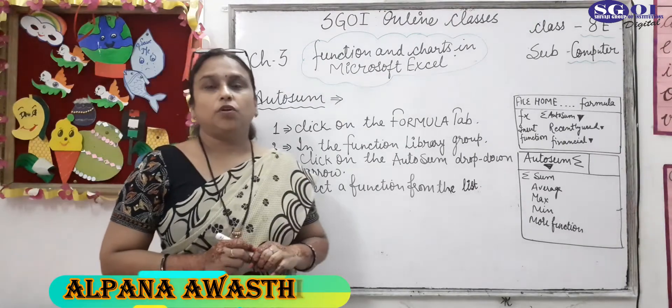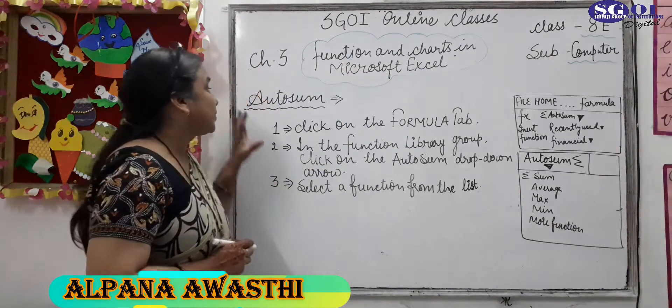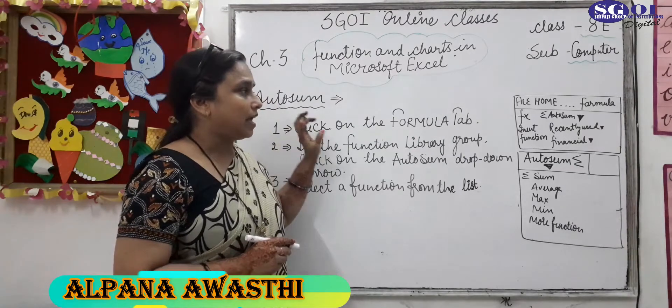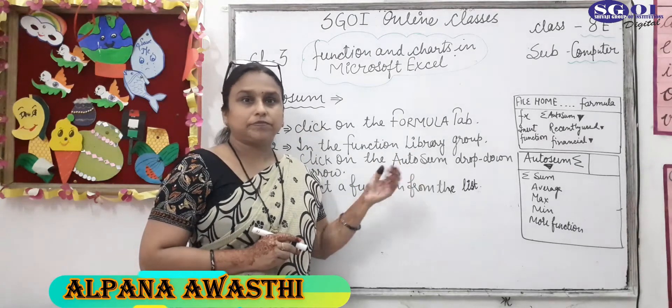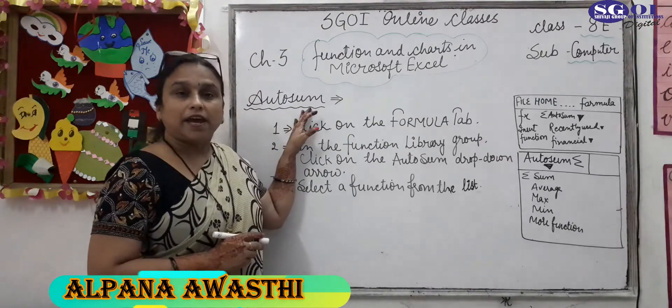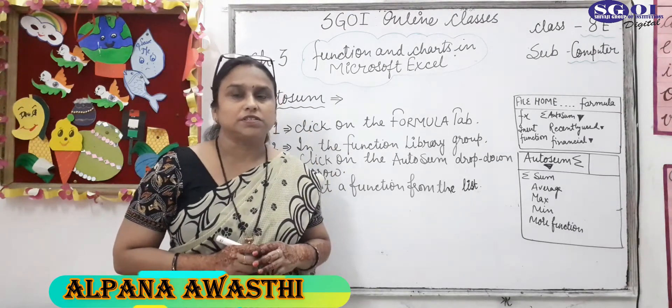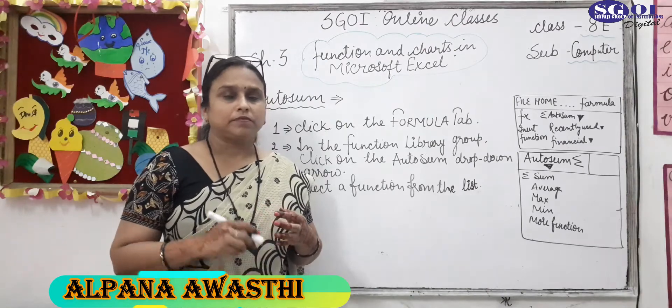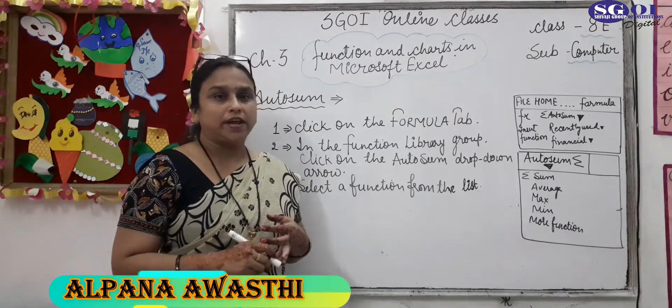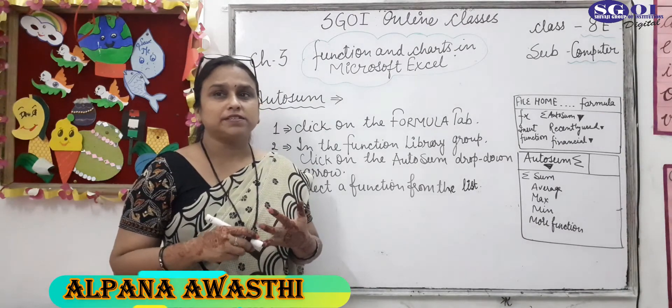What is the mean of auto sum function? Auto sum function is a tab in your Excel machine. It can insert different types of mathematical functions like SUM, AVERAGE, COUNT, MIN, MAX, etc.